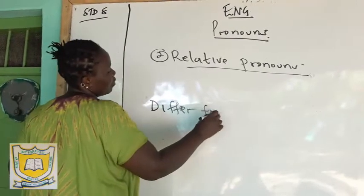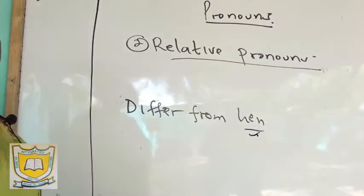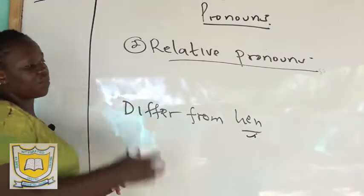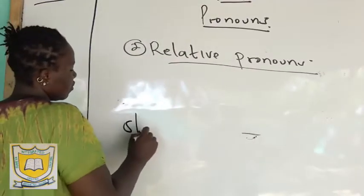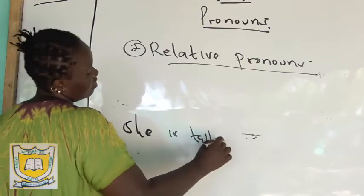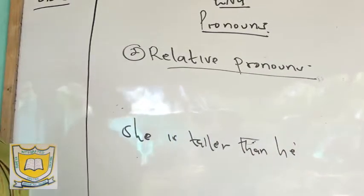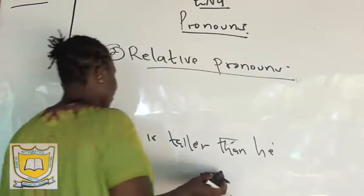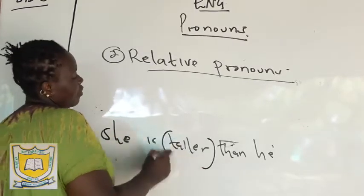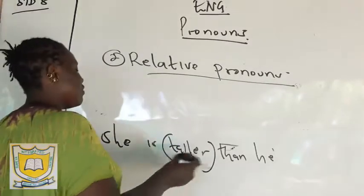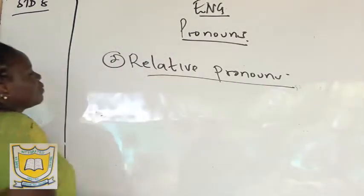For example, 'differ from her' — 'her' is an objective personal pronoun because it follows a preposition. But you can say 'she is taller than he.' If you read that sentence it sounds wrong, but in this context it is correct, because when you are comparing using the comparative form of adjectives, you use the nominative personal pronoun.